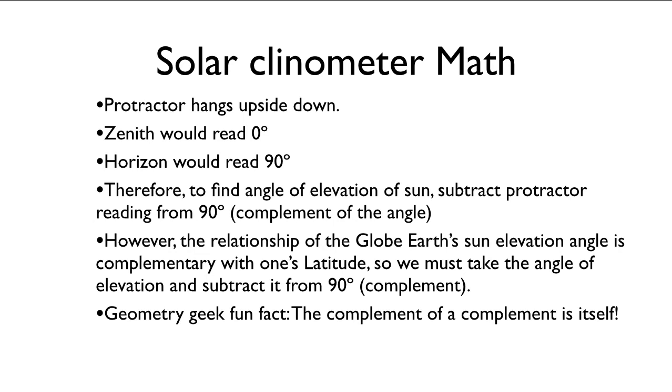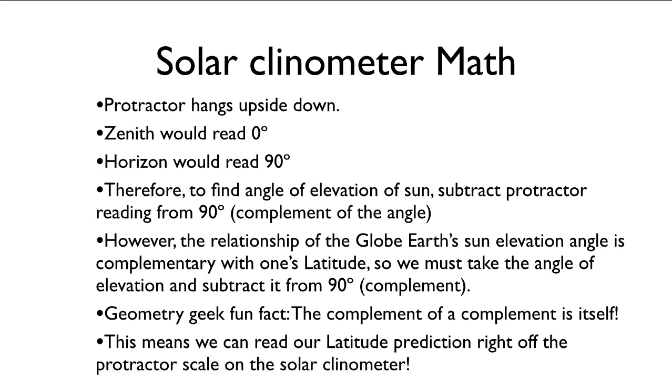So if you like geometry, you may know that the complement of a complement is itself. So if you take a number and you subtract it from 90, and then you subtract that from 90, you're going to get the original number. So this means that we can take our latitude prediction, we can read it right off the protractor scale on the solar clinometer.